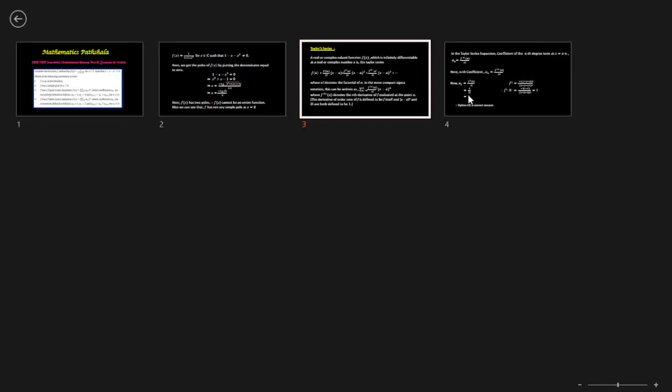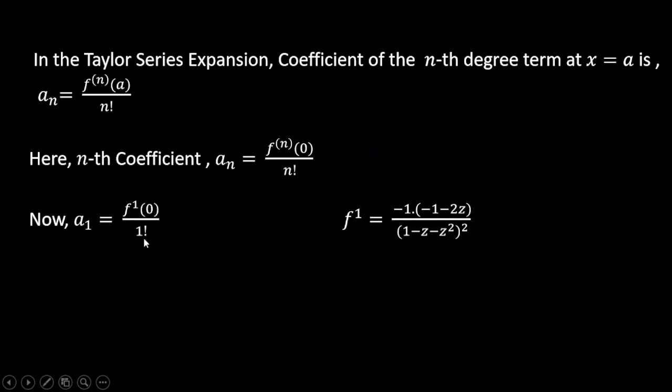So a₁ = f'(0)/1!. So what is f'? f' is here this, and f'(0) is equal to 1. So here we write 1/1! = 1.